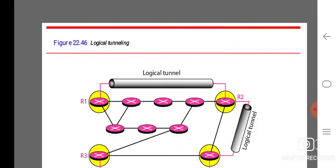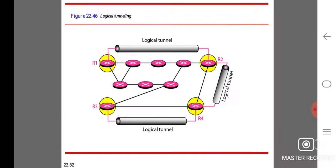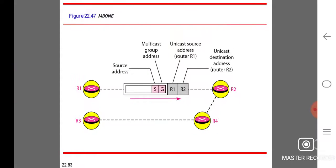Logical tunneling: here we are using four kinds of routers for logical tunneling. In M-bone, we are using S as the source address, G that represents the multicast group address, R1 is the unicast source address router R1, and router R2 is the unicast destination address.